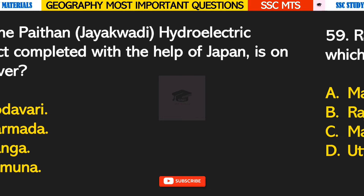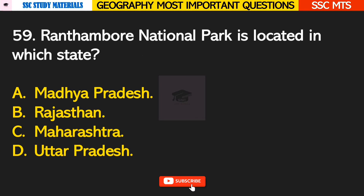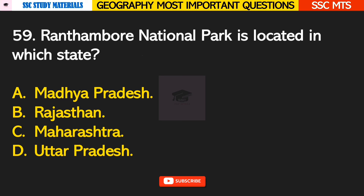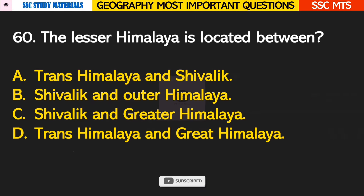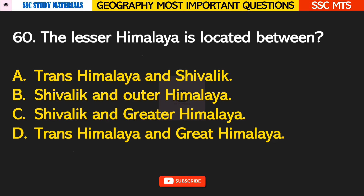Question number 59: Ranthambore National Park is located in which state? Answer B — it is located in the state of Rajasthan. Question number 60: the Lesser Himalaya is located between? Answer C — it is located between the Shivalik and Greater Himalaya.